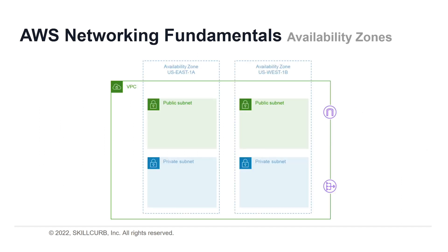When you set up subnets inside your VPC, you place them in particular availability zones. Availability zones are distinct locations within an AWS region engineered to be isolated from failures in other availability zones. They provide inexpensive, low-latency network connectivity to other availability zones in the same AWS region.